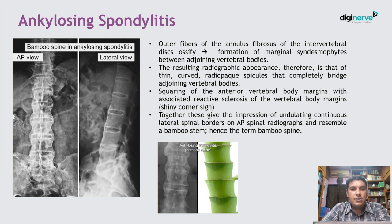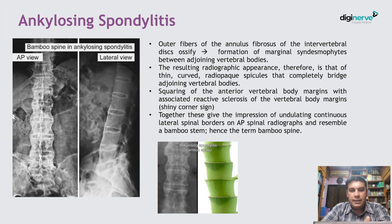Ultimately, squaring of the anterior vertebral body margins with associated reactive sclerosis of the vertebral body margins occurs, which is called the shiny corner sign. Together, all these give rise to the appearance of a bamboo spine.